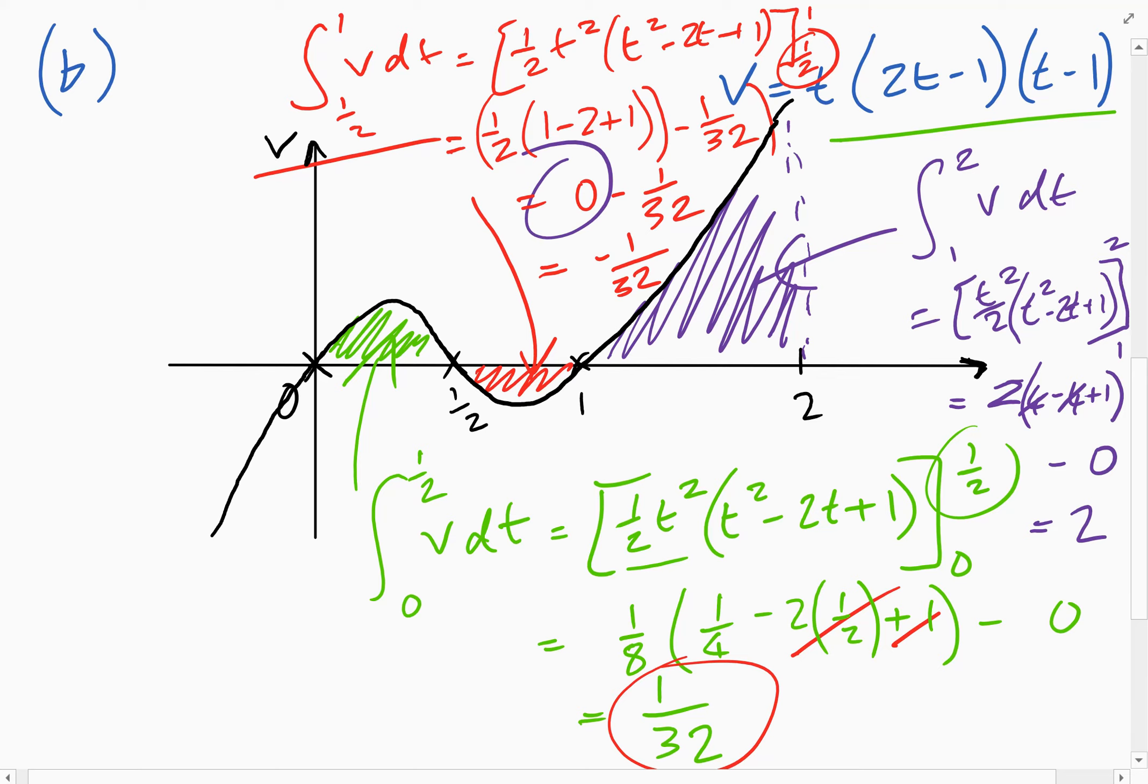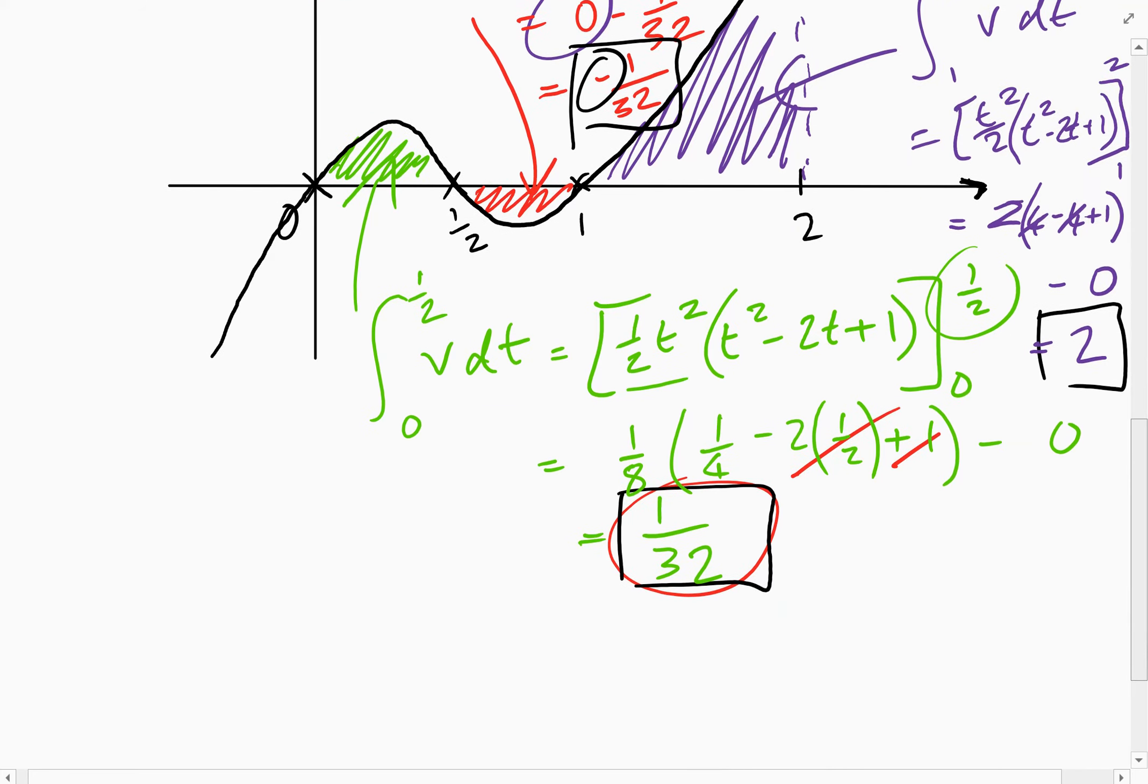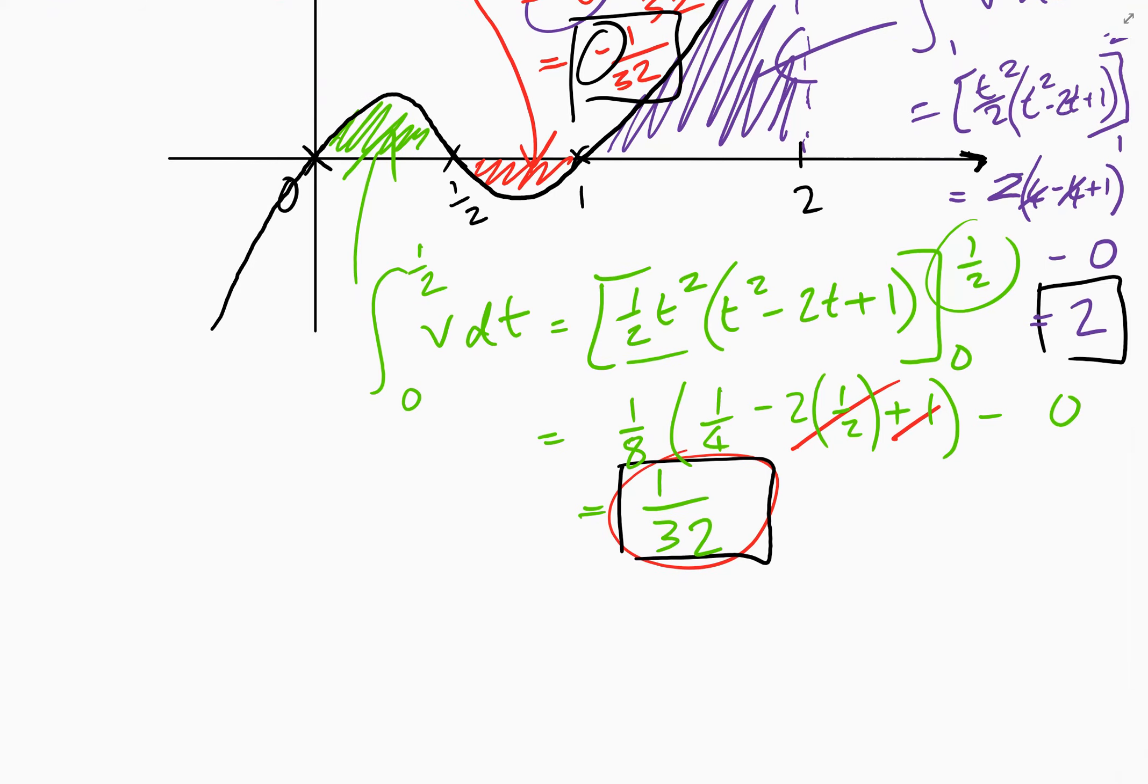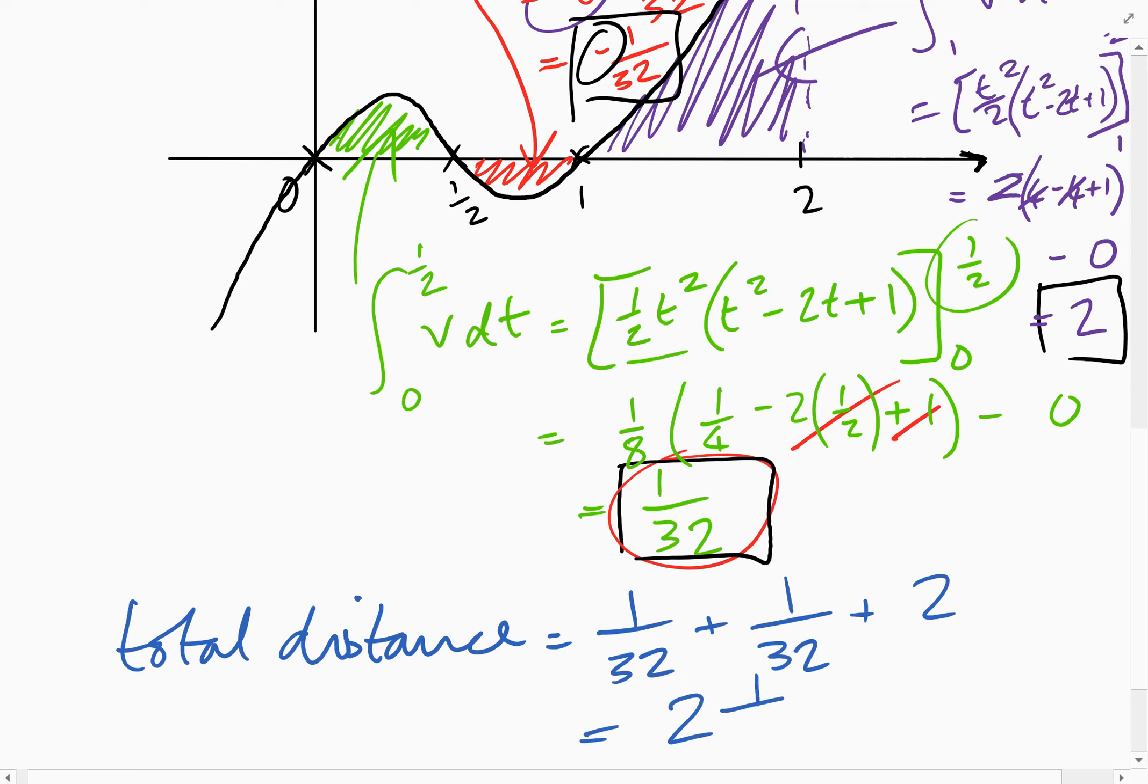So our three areas that we've got, if I just put those in a black box here. So we've got this, we've got this, and we've got this. But remember to change this integral to positive. So we need to make that plus one over 32 because we're talking about the total distance and the distance can't be negative. So the total distance is one over 32 plus one over 32 plus two, which is two and one sixteenth.